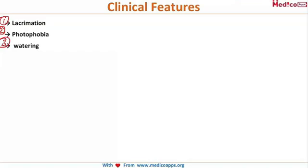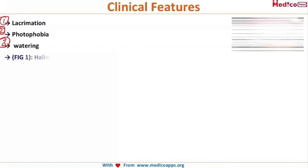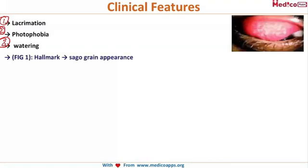The hallmark features of trachoma — whenever you see these findings, you will have to remember trachoma. The most important and pathognomonic one is the Sargograin appearance on the conjunctiva.